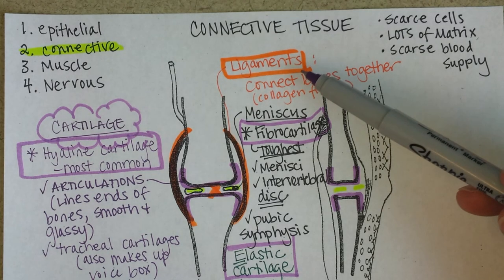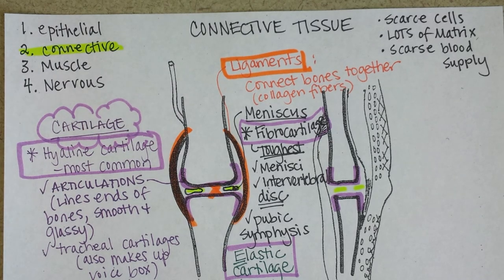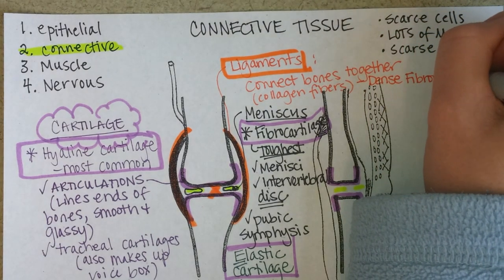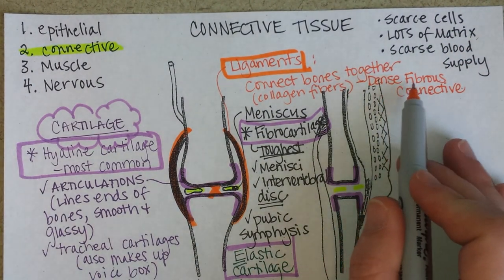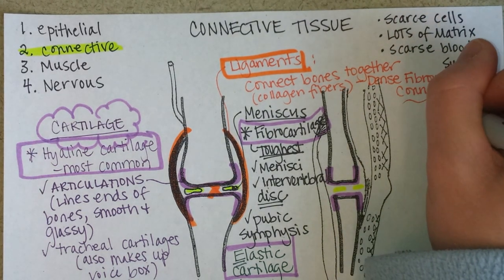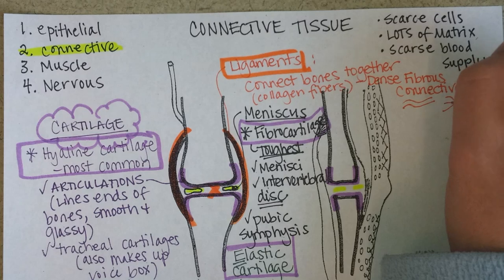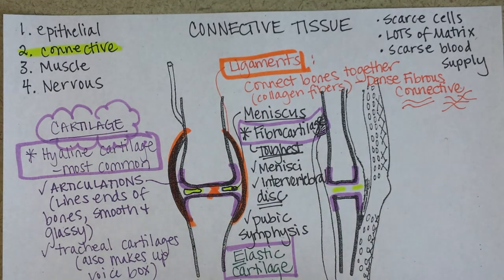Ligaments are another kind of connective tissue. They connect bones together and are notable in that they don't have very many cells or ground substance at all. They're primarily collagen fibers, which is why we call it dense fibrous connective tissue. There are two kinds: dense regular, where the collagen fibers are in a predictable wavy pattern, and dense irregular, where they're crisscrossy and look more random. Ligaments are dense regular fibrous connective, and so are tendons.